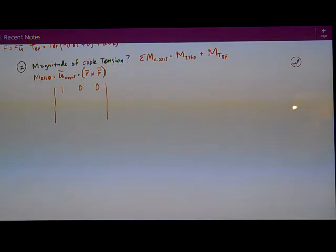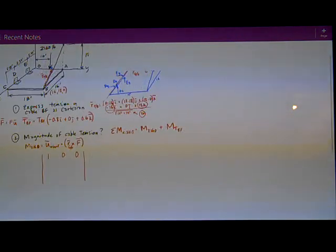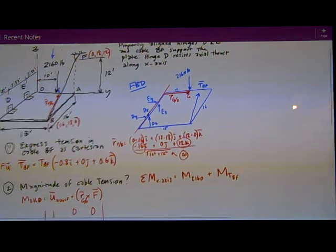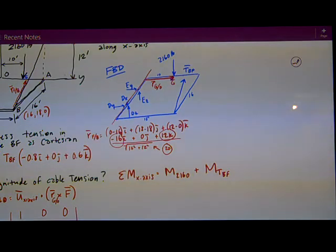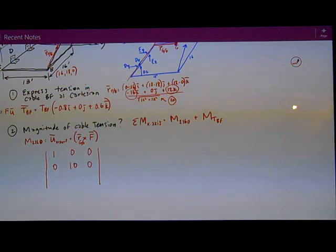On the top I have the unit vector of the x-axis, which is, since it's just X, it is 1, 0, 0. RG over O is that position vector from O to point G, which is in the Y direction, 10 units. So this position vector on the middle row looks like 0, 10, 0. On the bottom row I have my force vector, 0, 0, and negative 2160. So remember that's unit, position, force for those rows.